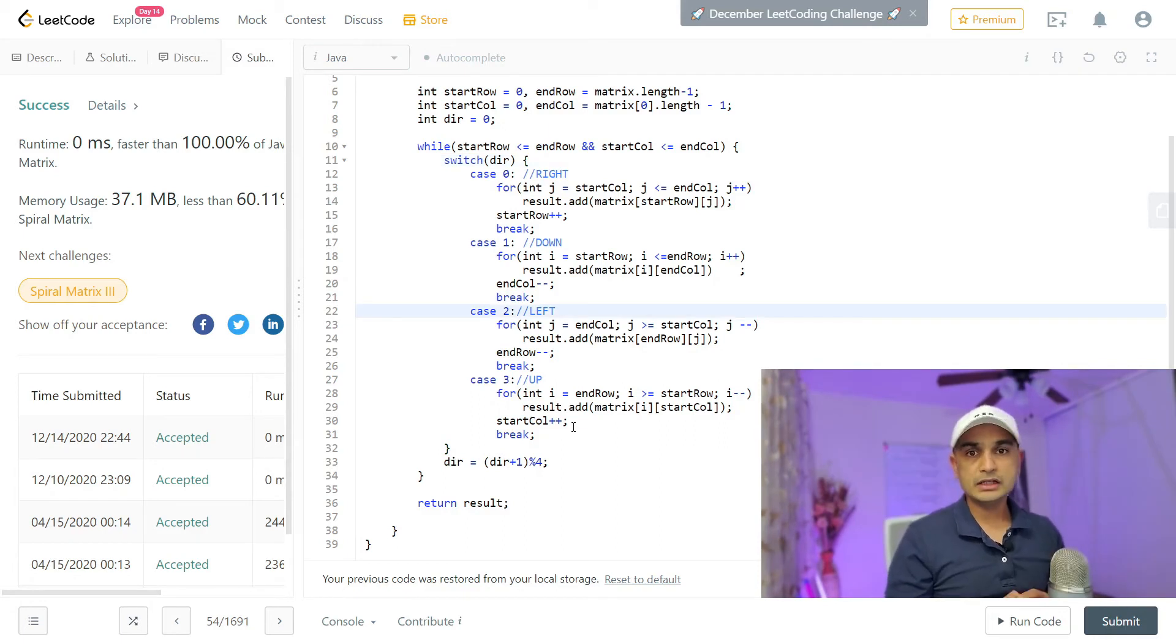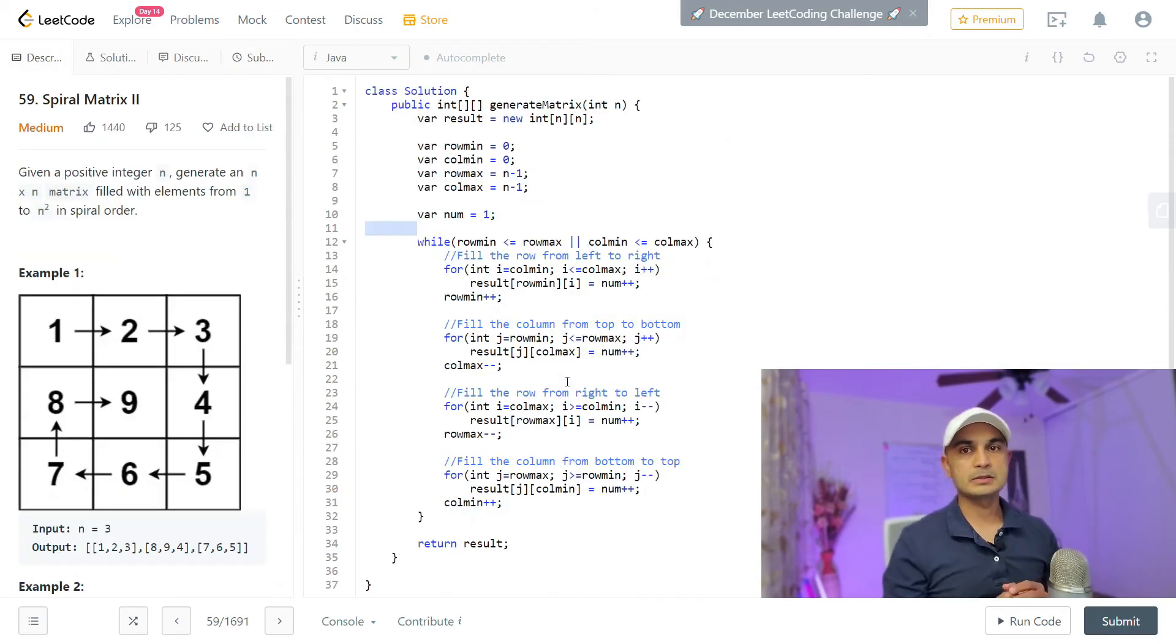Since we have done this problem, I just wanted to show one similar problem, not similar but exactly the same problem, and the same logic or same approach will solve that problem. The problem is spiral matrix two. In this, instead of traversing the matrix, we need to create the matrix. It's an n by n matrix, a square matrix. If n is three, then we need to create a three by three matrix and we need to fill numbers from one to nine in a spiral manner.